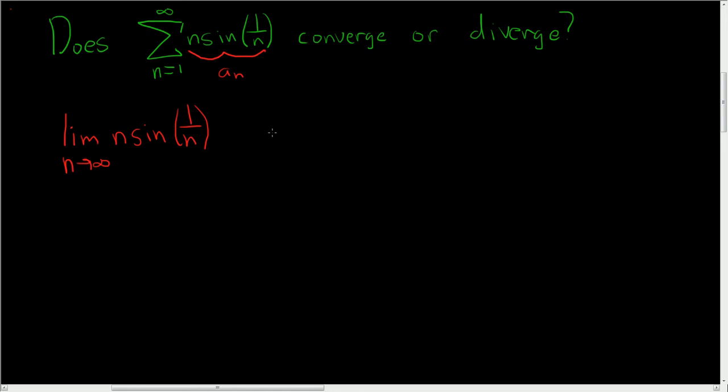Now if this limit is zero, we are out of luck, no information. If this limit is not zero, we're done. The series diverges.